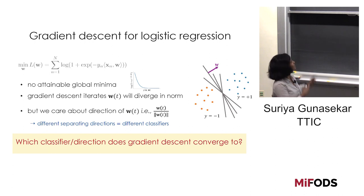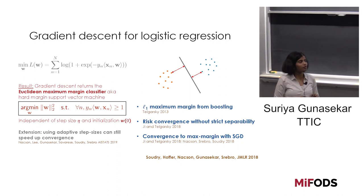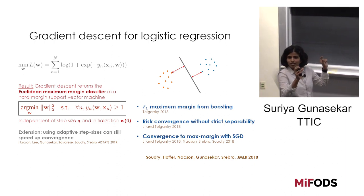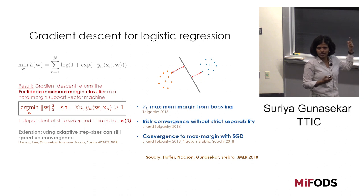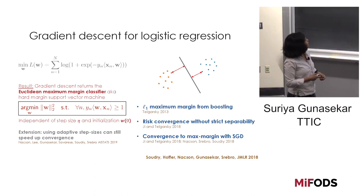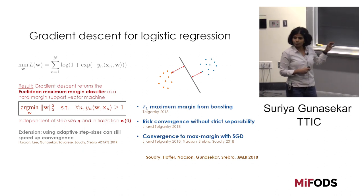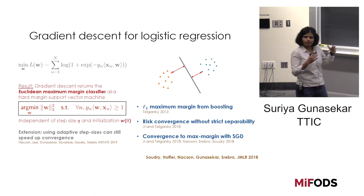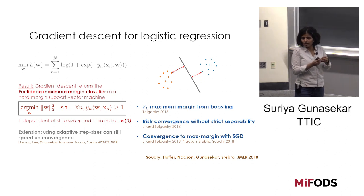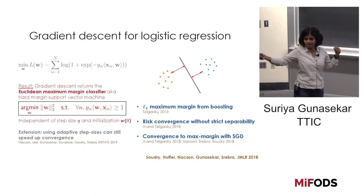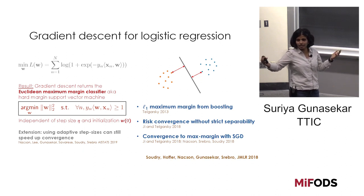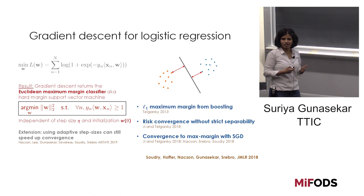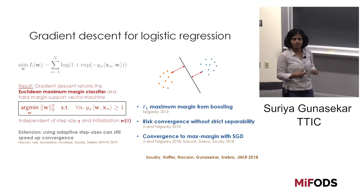The main question is which direction does gradient descent converge to? The answer—which Matus already gave—is the maximum margin separator: the separator which maximizes the distance to the closest point measured in L2 norm, the Euclidean max margin. Interestingly, this result is independent of the step size and initialization. Intuitively, because the norm of w(t) goes to infinity, from an infinite distance all initializations and step sizes start looking infinitesimal—which is why the characterization is independent of those choices.